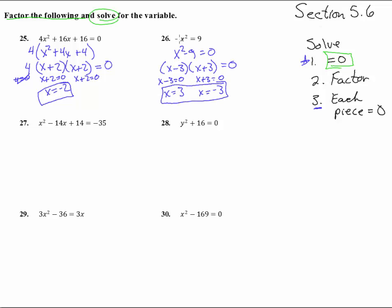Now notice that both of these will work. If we take 3 up here for x, 3 squared is 9. Negative 3 squared is also 9, and we get both answers that way.